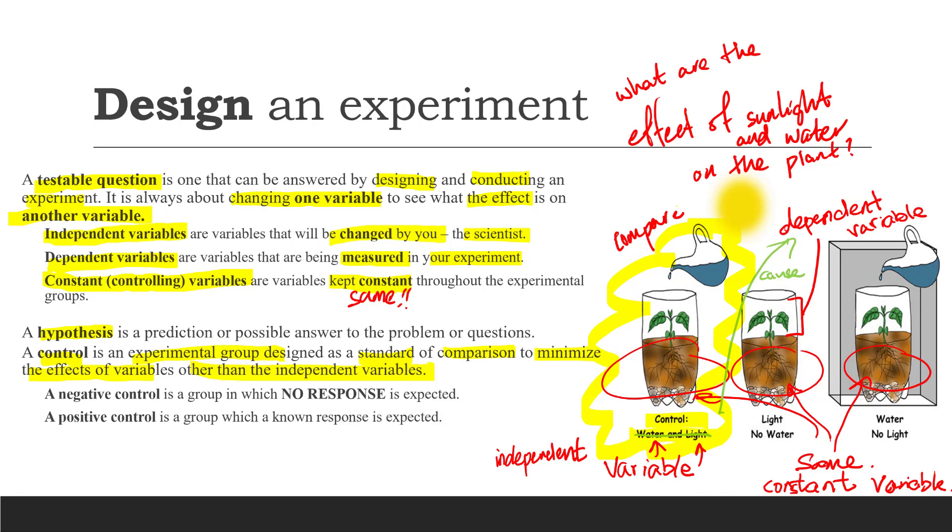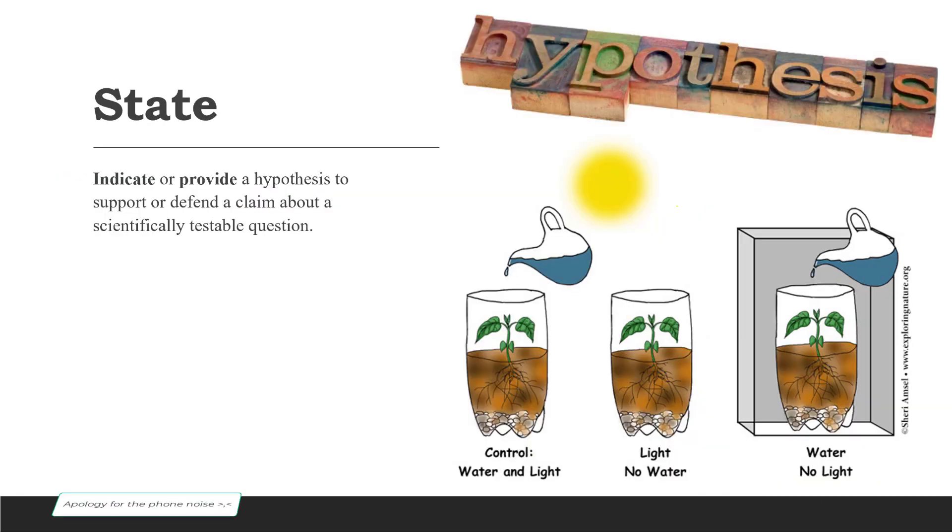Next, state, which means to indicate or provide. State is most commonly used to indicate or provide a hypothesis which supports or defends a claim about a scientifically testable question. If we were being asked to state something, we would have to write it in full sentence.